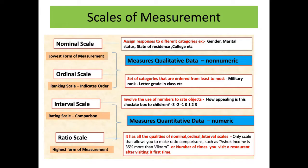Now let us go ahead and see what a ratio scale is. It has all the qualities of nominal, ordinal, and interval scales. This is the only scale that allows you to make ratio comparisons, such as Ashwak's income is 35% more than Vikram's, or the number of times you visit a restaurant after visiting it for the first time.